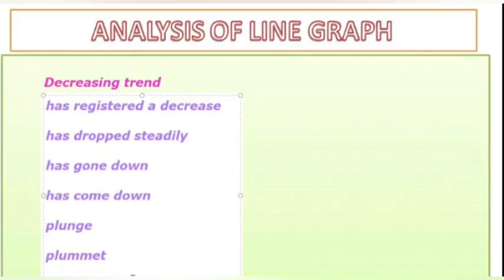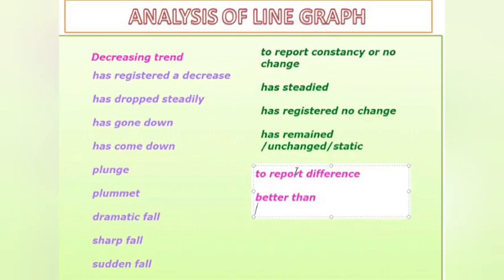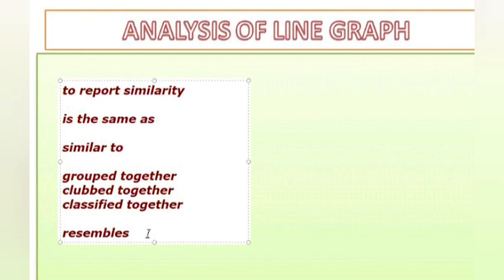Let me give you the language that will be useful in almost all reports. To show a decreasing trend, use: 'has registered a decrease,' 'has dropped steadily,' 'has gone down,' 'has come down,' 'plunge,' and 'plummet.' To report consistency or no change, use: 'has steadied,' 'has registered no change.' To report difference, use 'better than.' To report similarity, use: 'is the same as,' 'similar to,' 'grouped together,' 'resemble,' 'semblance,' 'classified together.'